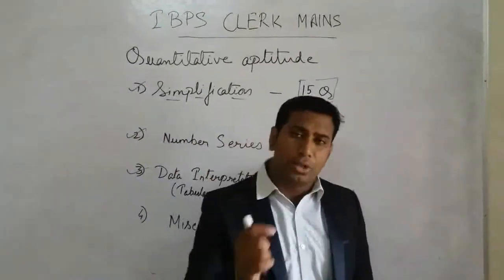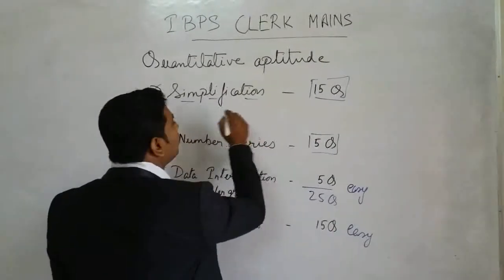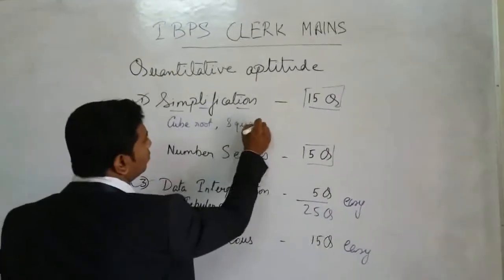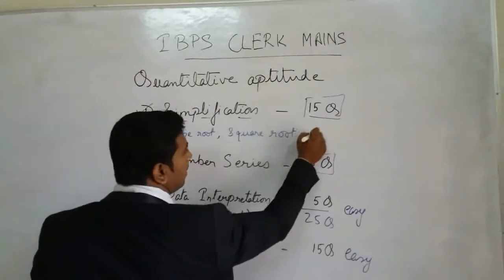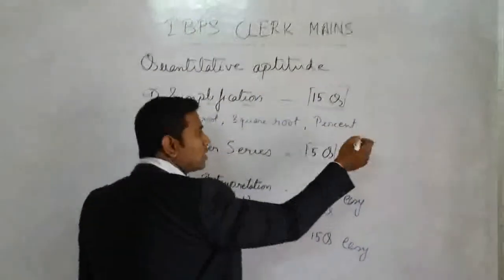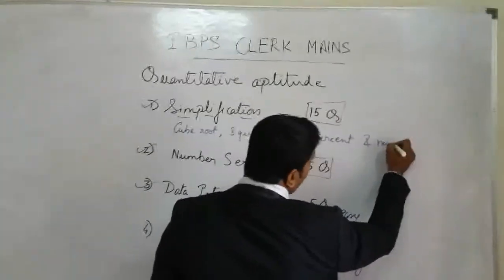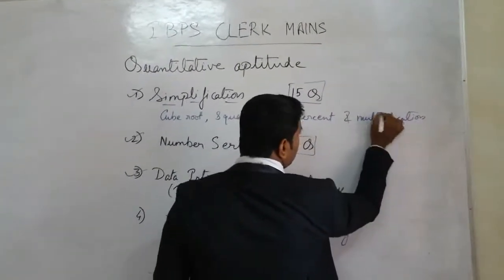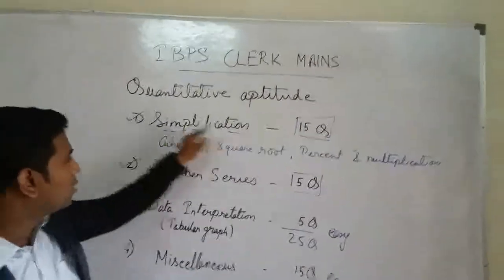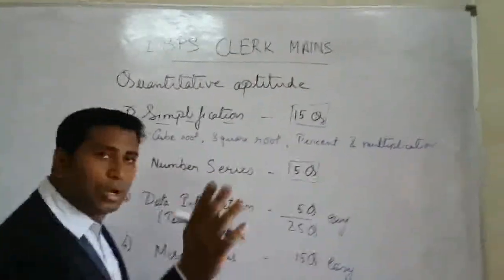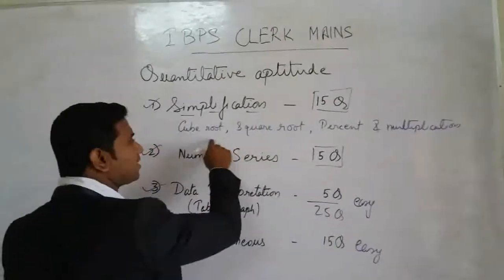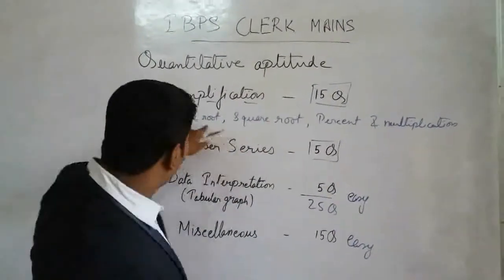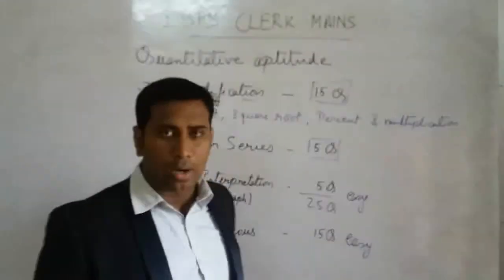In simplification, you need to learn cube root, square root, percentages, and obviously multiplication and calculation. You should learn faster calculation — how to solve numbers quickly so you can easily solve simplification. Your homework and assignment is to practice cube root, square root, percentages, and multiplication. I have also posted a video on cube root that you can refer to.